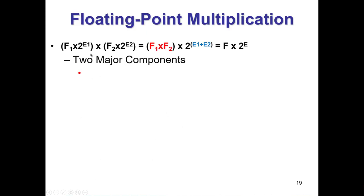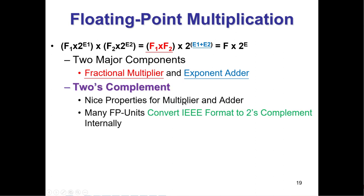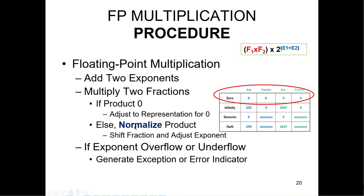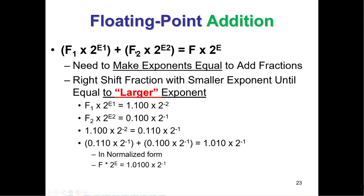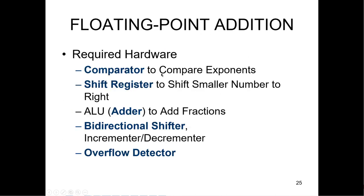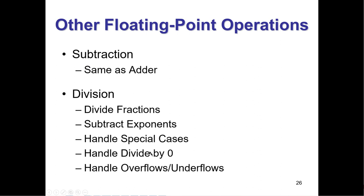When you multiply floating point numbers, you multiply the significands and add the exponents. When you add two floating point numbers, you modify them to make the exponents equal and then add them, then renormalize. You normally right-shift the fraction with the smaller exponent until that exponent equals the larger one. Subtraction is the same as addition using two's complement. Division is a little different — you subtract the exponents and divide the fractions.